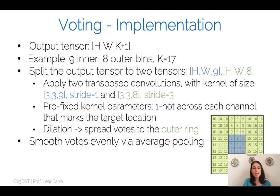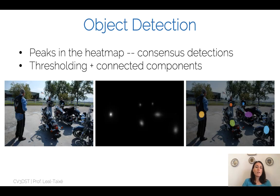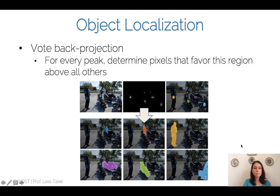In the object detection example with motorbikes and persons, votes are cast and peaks detected in the heatmap — these peaks represent consensus between pixels of an instance that all voted for the same center. By thresholding and connected component analysis, centers for all objects are detected. Finally, back projection: for every peak we determine which pixels voted for that center to localize the instance mask.